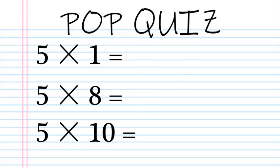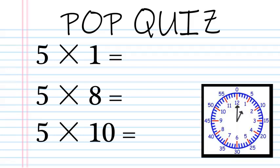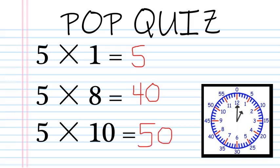I love the five times tables because it's just like the clock. Five times one — that's just one five, and on the clock the one represents five, so five times one is five. Five times eight — the eight on the clock represents forty, so five times eight is forty. Five times ten — the ten on the clock represents fifty, so five times ten is fifty.